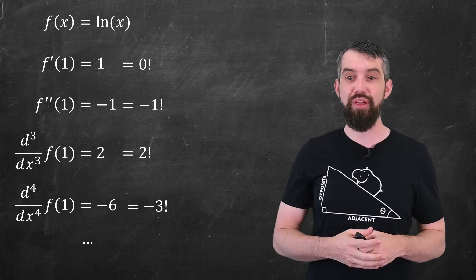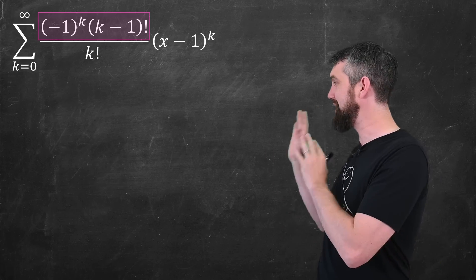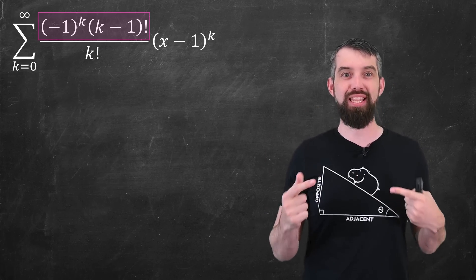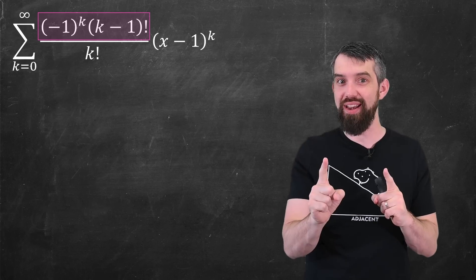So putting all of this together, I can say that my Taylor series centered at the value of 1 for logarithm is this, where I've replaced the derivatives with negative 1 to the k, and then k minus 1 factorial.